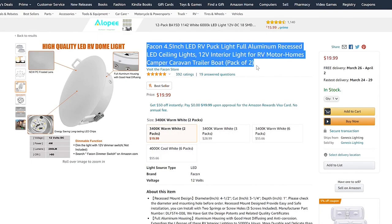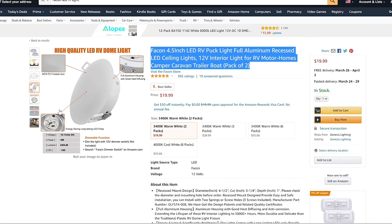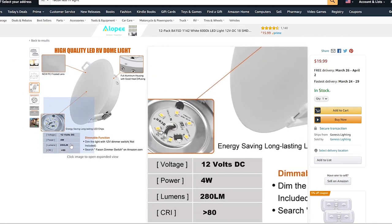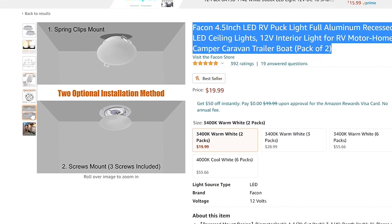The one I'll be installing today is a Facon 4.5 inch LED puck light. It's a 12 volt DC 4 watt 280 lumen puck light with the option to mount using spring clips or screws.